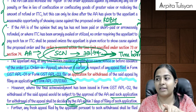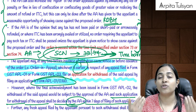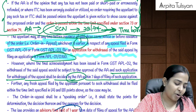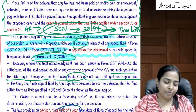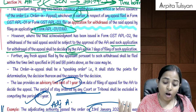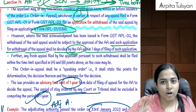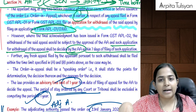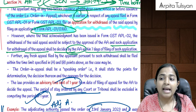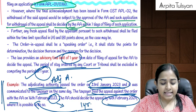Before issuing a show cause notice under section 73/74, the appellate authority must check whether the time period to issue it has expired. If time-barred, proceedings must be dropped. Also, before the order is passed, if the appellant wants to withdraw the appeal, they can apply — but if the final acknowledgement has already been issued, withdrawal requires the appellate authority's permission.